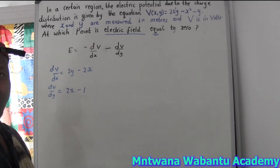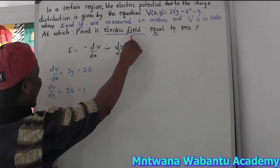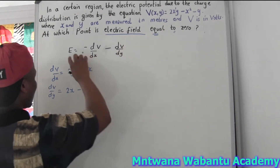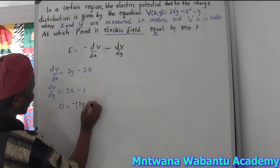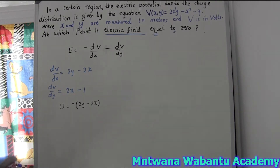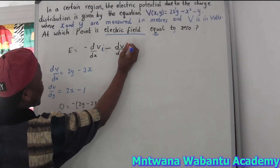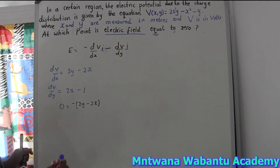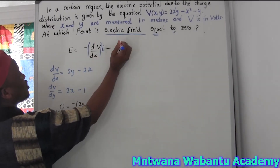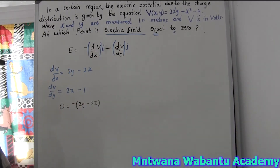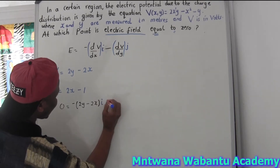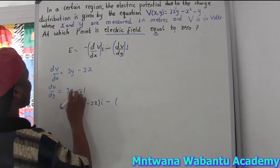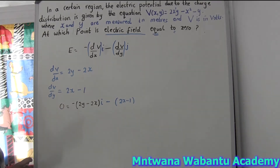Now substitute these back to get the electric field in vector form. Since we want to find the point where the electric field equals zero, we set E = 0. This gives us: 0 = -(2y + 2x)î - (2x - 1)ĵ. Remember, when you differentiate in vector form, the dV/dx component carries î and the dV/dy component carries ĵ.